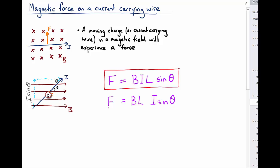So we've got the force measured in newtons, the force experienced by the wire, the current measured in amps, the length of wire exposed to the magnetic field, and the magnetic field strength here. And this I sine theta is the component of the current, which is perpendicular to the magnetic field.